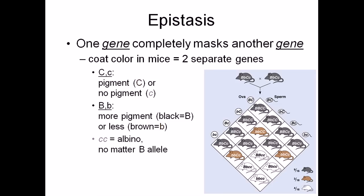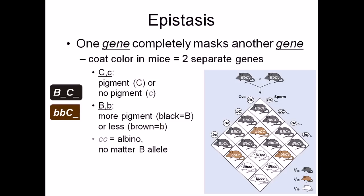If you have small C small C, you will have neither a black coat nor a brown coat because there is no pigment at all. It gives a completely different color characteristic called Albino — totally white. This is epistasis, where one gene acts as a master regulator, completely masking the effect of the other gene.